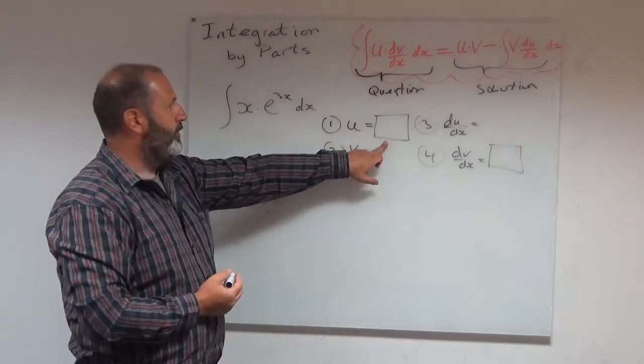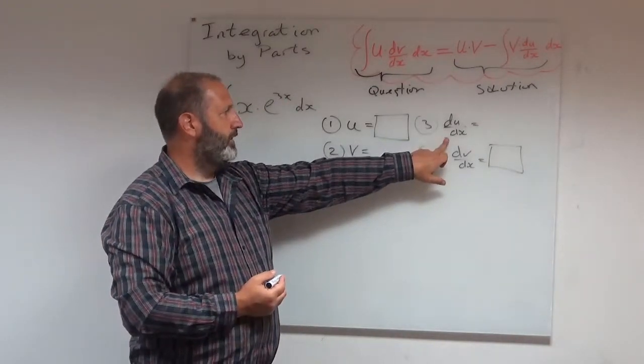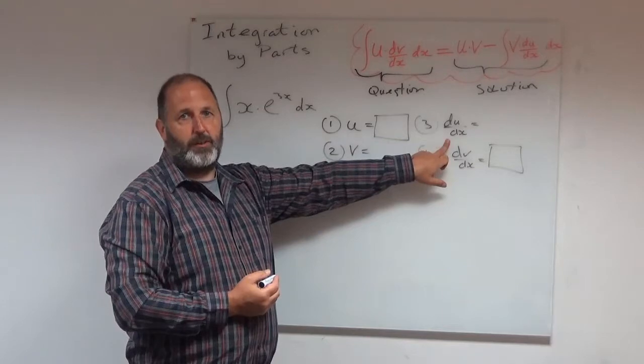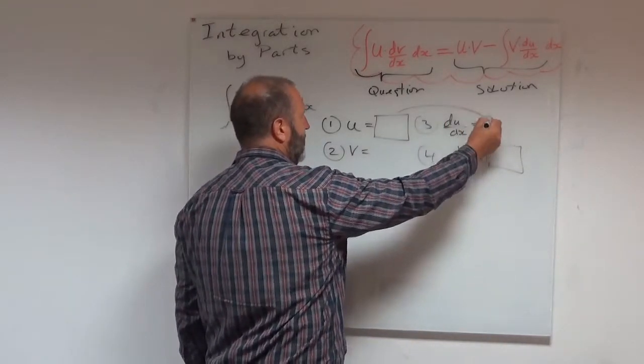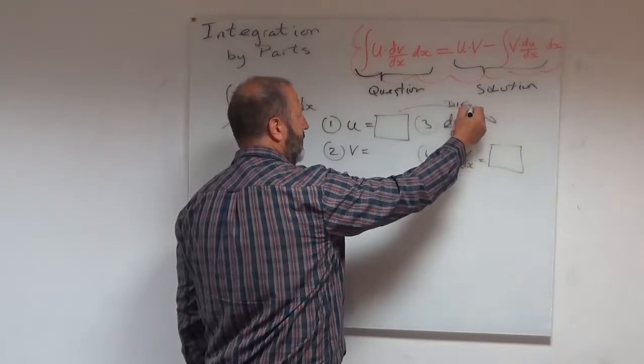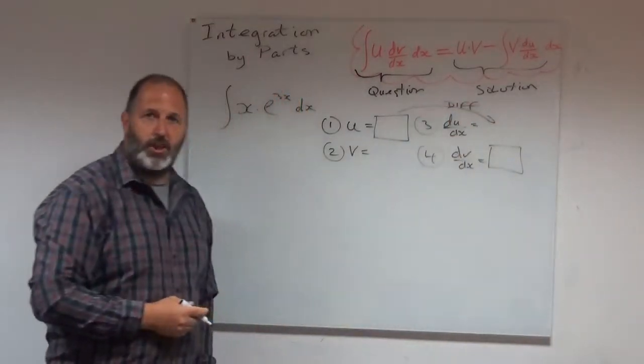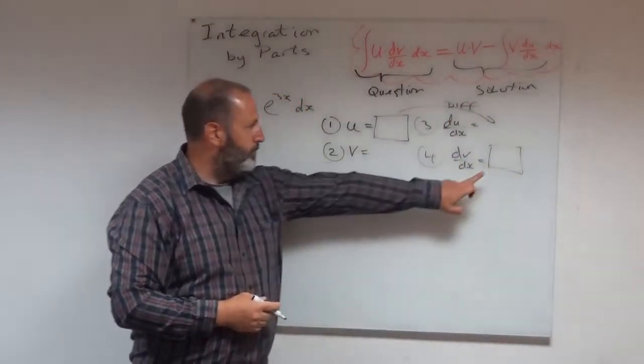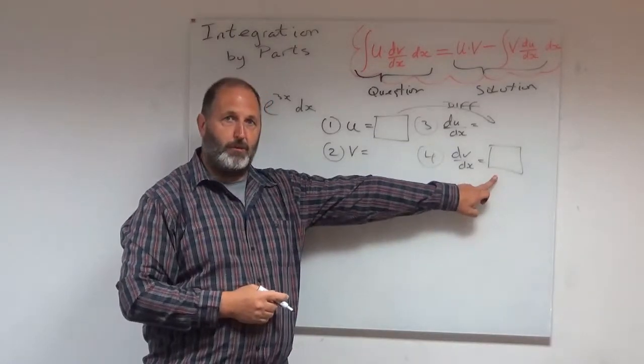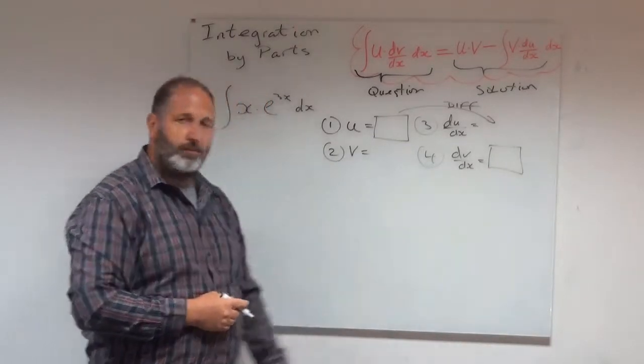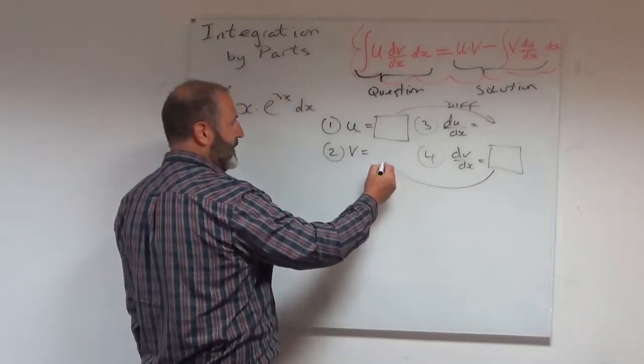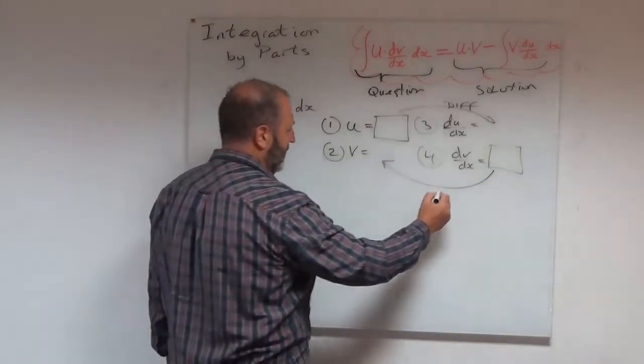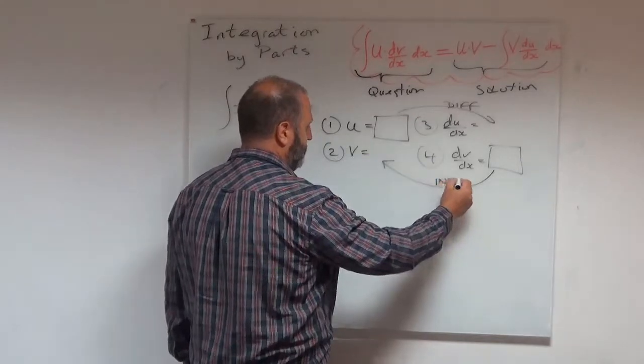How am I going to get from u to du dx? Well, don't forget that du dx just means differentiate u. So to get from here to here, I'm going to differentiate. But one of my terms is going to be dv dx. So I've got to get to a v from there. So we have to do the opposite of differentiation and I have to integrate.